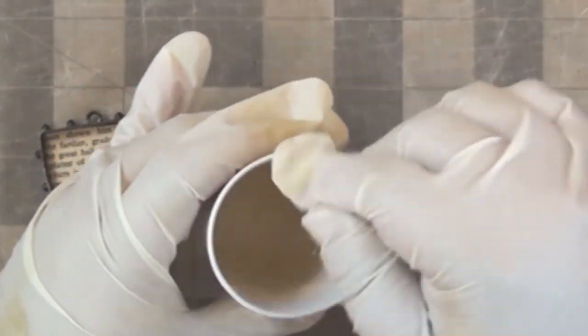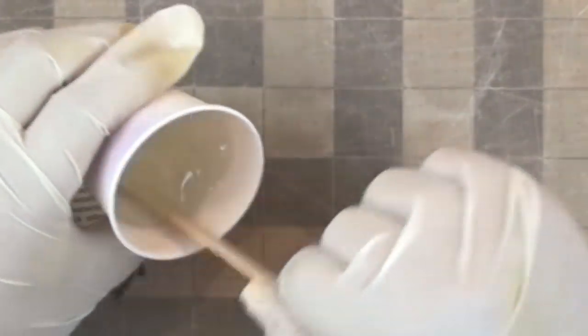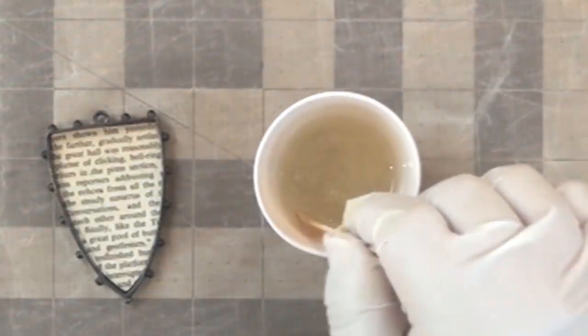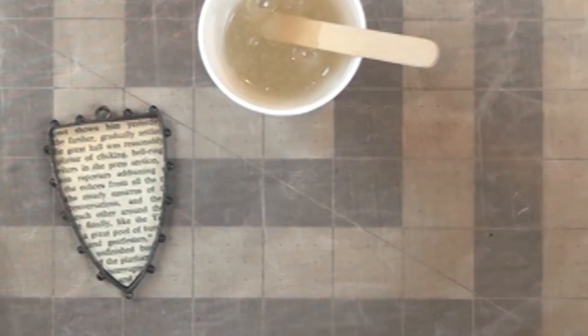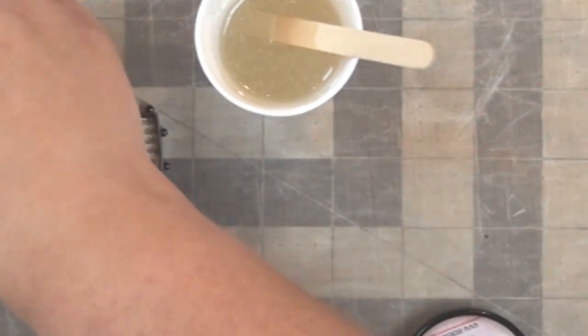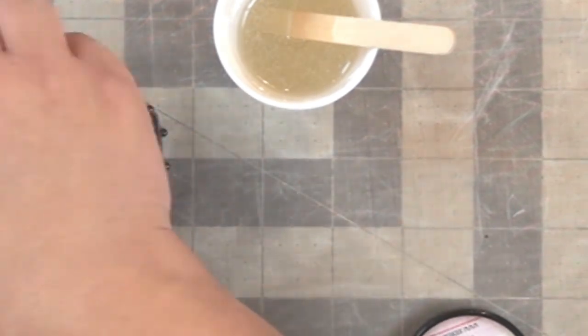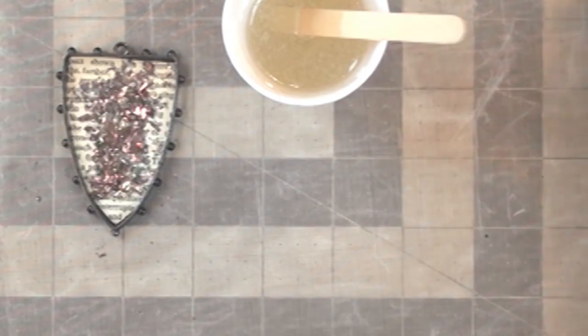So you want to mix this for two minutes until it's crystal clear. You can see strings of translucent, iridescent stuff in the resin. That means it's not mixed yet, so you want to keep mixing. Once you have it mixed, you're ready to pour it. What I wanted to do here is put an opalescent effect in the back of the bezel.